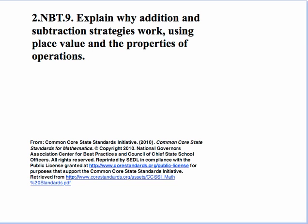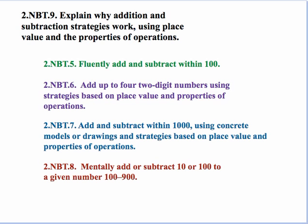So it's a fairly simplistic standard. Let's look at the related and connected standards to this. If we look at 2NBT.5, that one says fluently add and subtract within 100. This is also connected to 2NBT.6, which involves adding up to four two-digit numbers using strategies based on place value and properties of operations.